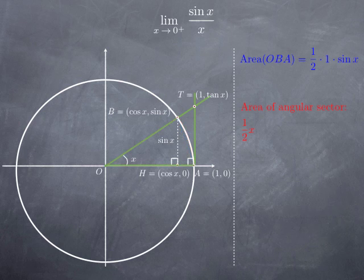Finally, we calculate the larger area of the green triangle OTA. This is a right triangle at A, so a base could be radius OA of length 1, and the height is length AT, which as we have seen is tan x. So one half base times height gives one half of tan x.